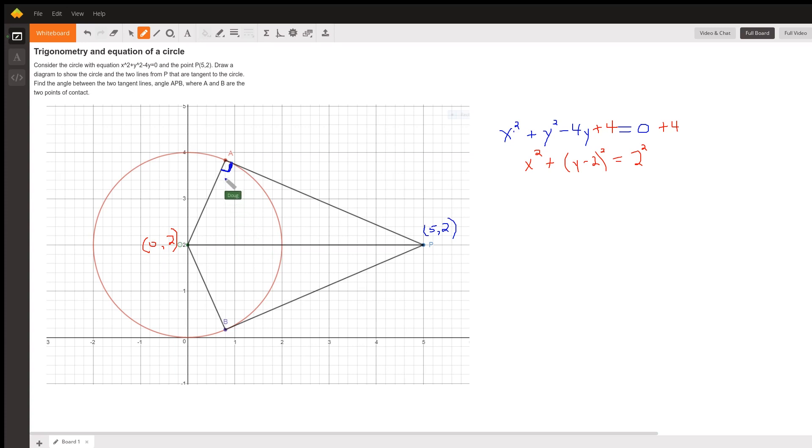The radius of this circle is 2, and the distance from O to this external point is 5.